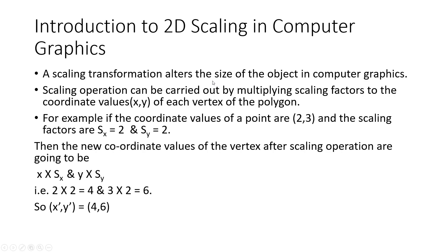So first, introduction to 2D scaling in computer graphics. Till now we have learnt about two different types of 2D transformation — first we learnt about translation, then we learnt about rotation. Now we are learning about scaling. A scaling transformation alters the size of objects in computer graphics. In translation we change the position of the object; in rotation we change the angle using a pivot point. Similarly, in scaling we change or alter the size of the object.